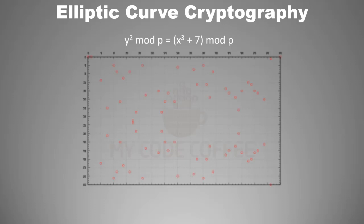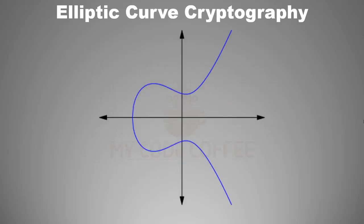So this elliptical equation used by Bitcoin, which results in a pattern of dots, and a normal elliptical equation share the same properties. To understand elliptical addition and multiplication, let us use the curve instead of dot patterns because it is easier to visualize.